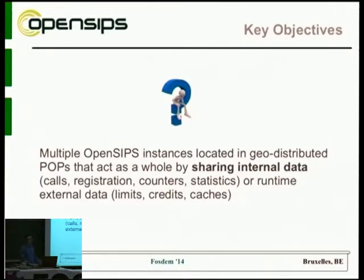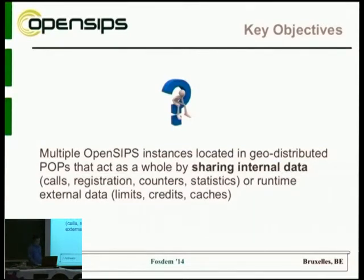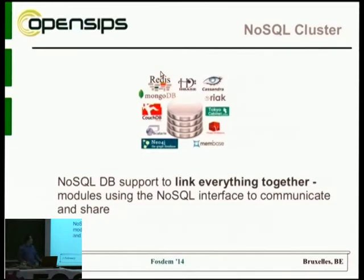The information we need to share includes internal info related to the SIP protocol — like ongoing calls and registrations — and runtime information that helps while routing calls, such as whether the user has enough credit to accept a call, or whether the user has exhausted their allocated concurrent channels. We decided not to reinvent the wheel and to use various NoSQL engines to link everything together, though this was not easy.